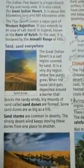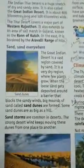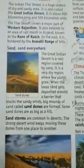Some sand dunes are as big as a hill. Sandstorms are very common in desert areas. The strong desert wind keeps moving these dunes from one place to another.